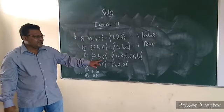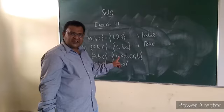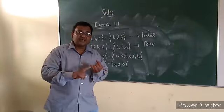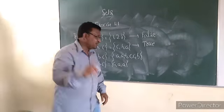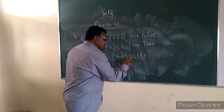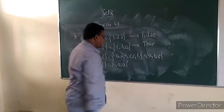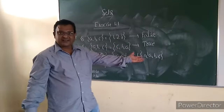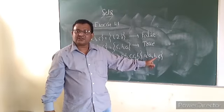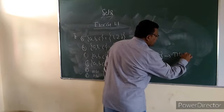Third one: {A, B, C} = {A, A, B, C, C, B}. A is repeating two times, B is repeating two times, C also repeating two times. If any element repeats, we write it one time only. So {A, A, B, C, C, B} becomes {A, B, C} only. Left-hand side A, B, C and right-hand side also A, B, C. So it is true.